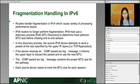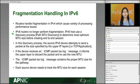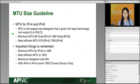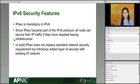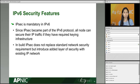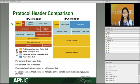Fragmentation handling in IPv6 uses path MTU discovery to prevent fragmentation — you discover the MTU size for the link first. The most efficient MTU size for IPv6 is 1500, which is usually set as default. IPsec is a mandatory feature for IPv6, built into the protocol itself.